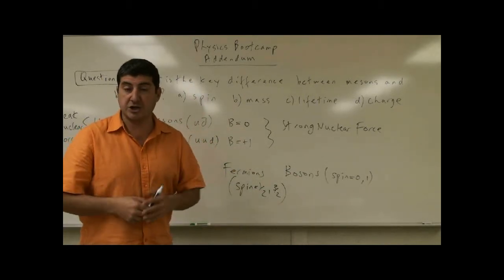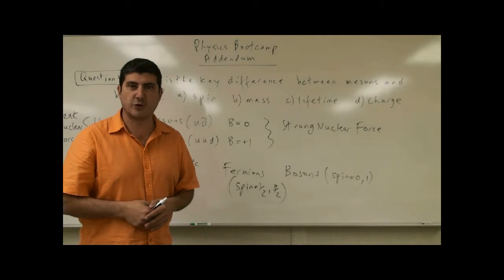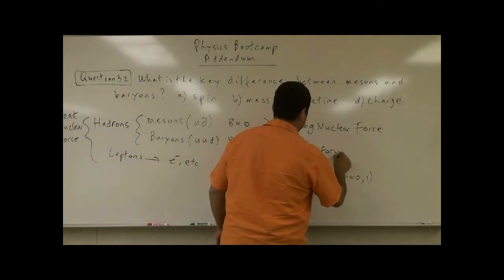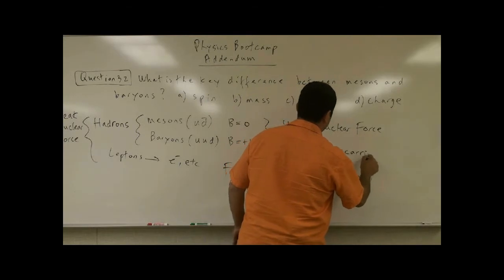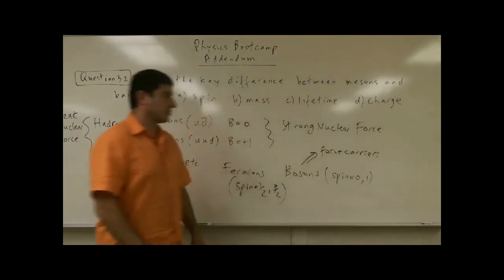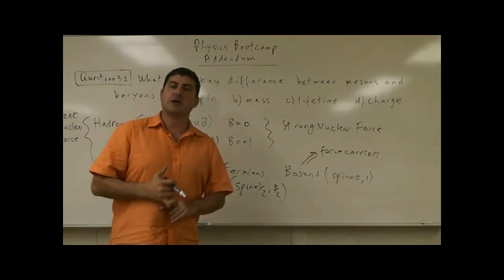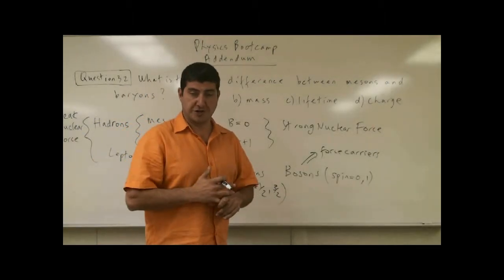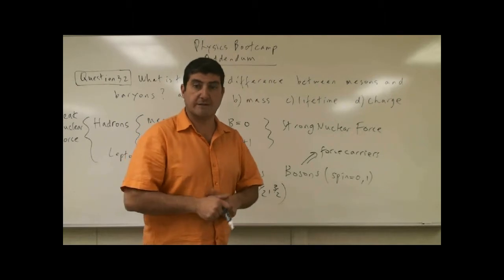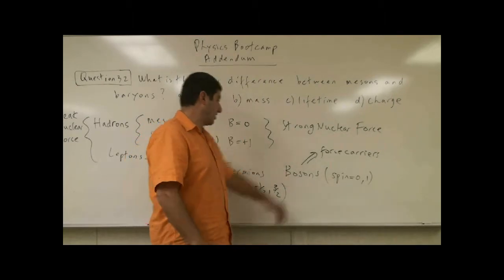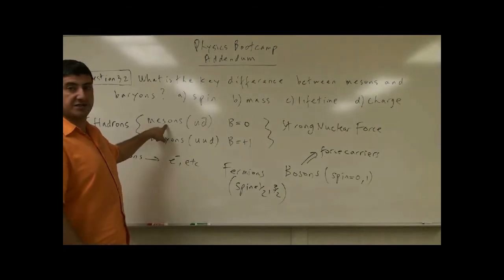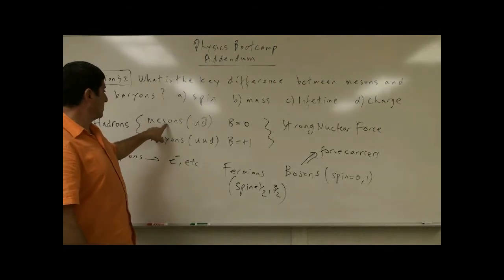The bosons we mentioned earlier are the force carriers. So those would be W plus, minus, Z boson, all of the other force carriers, graviton, gluon, photon. Those would be bosons. Now, the other kind of boson is the mesons.